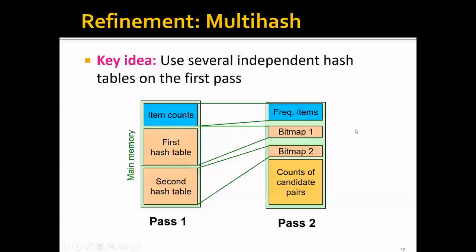Another refinement is multi-hash, and the key idea is quite simple. The original PCY algorithm uses one hash table, and multi-hash uses multiple hash tables. For example, we can use two hash tables, and in pass two we will have two bitmaps. We then count only the candidate pairs where both bits are one when hashed into each table.